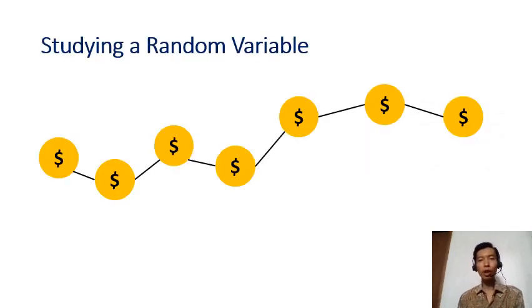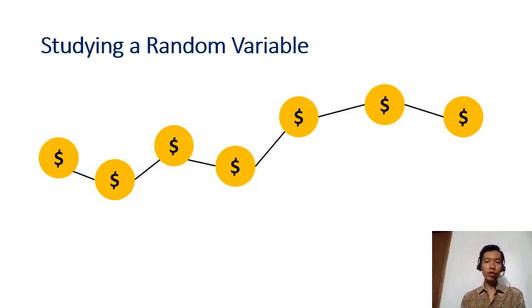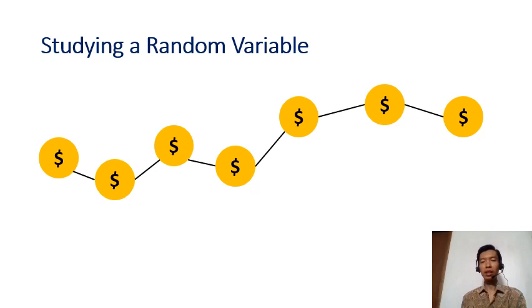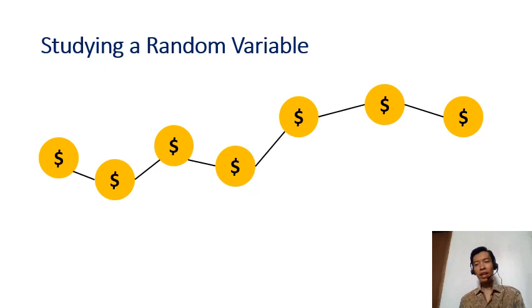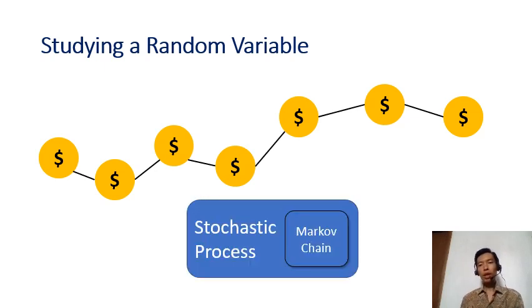Suppose you're studying the price of a stock. Stock prices change from day to day, and if you look at the stock price over a week, you'll notice it sometimes goes up and sometimes goes down. The price of a stock is a random variable because you don't know the value until that time actually happens — the price of a stock tomorrow you cannot know for sure until tomorrow arrives. Surely there is a relation between the price of one day and the price of the next day.